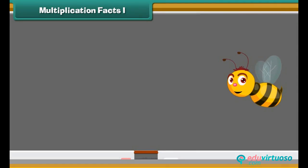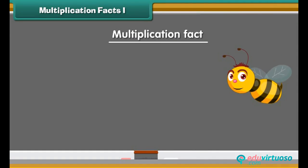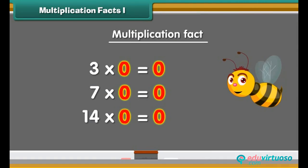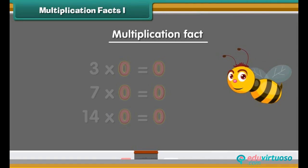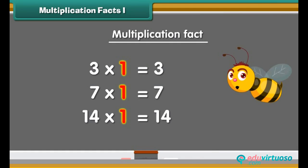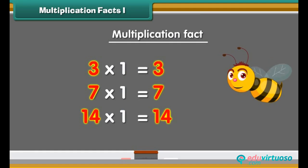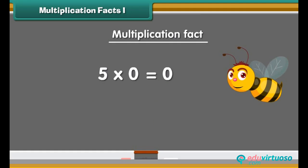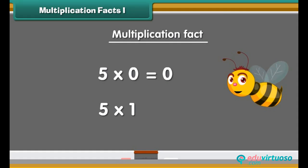We start with some multiplication facts. Any number multiplied by 0 is always equal to 0. A number multiplied by 1 is equal to the same number. Example: 5 multiplied by 0 is 0, 5 multiplied by 1 is 5.